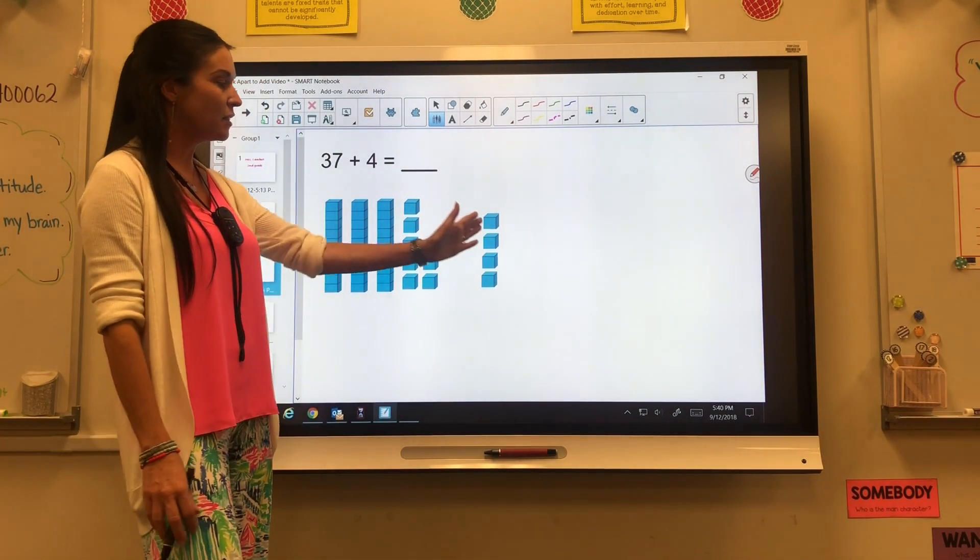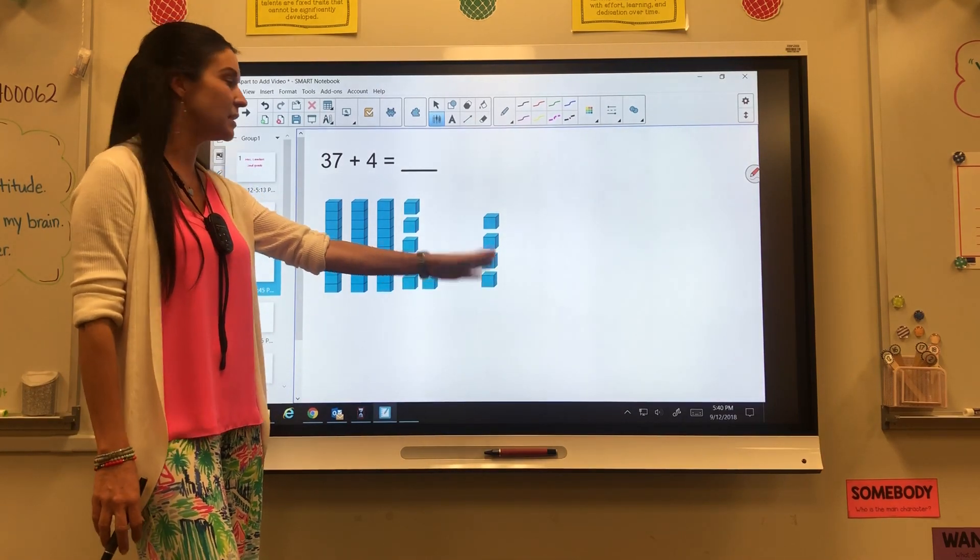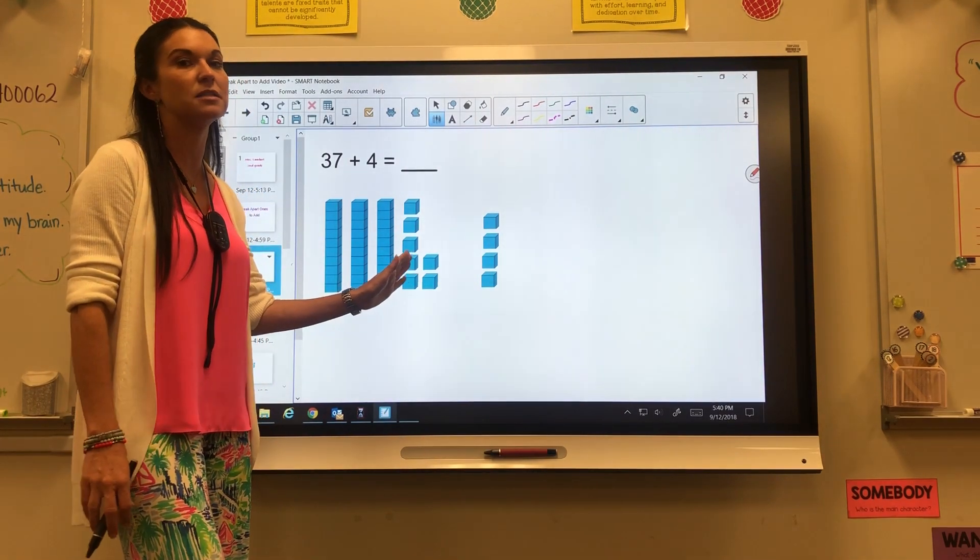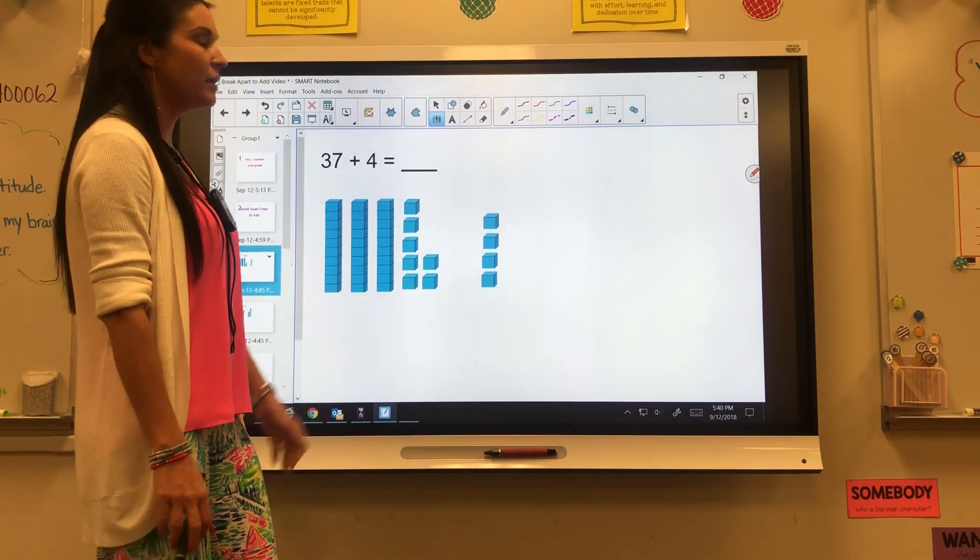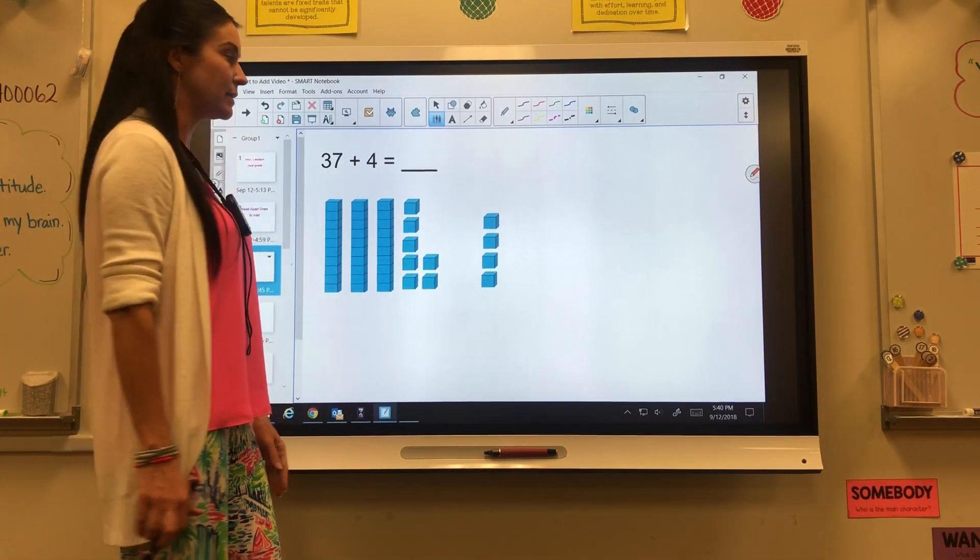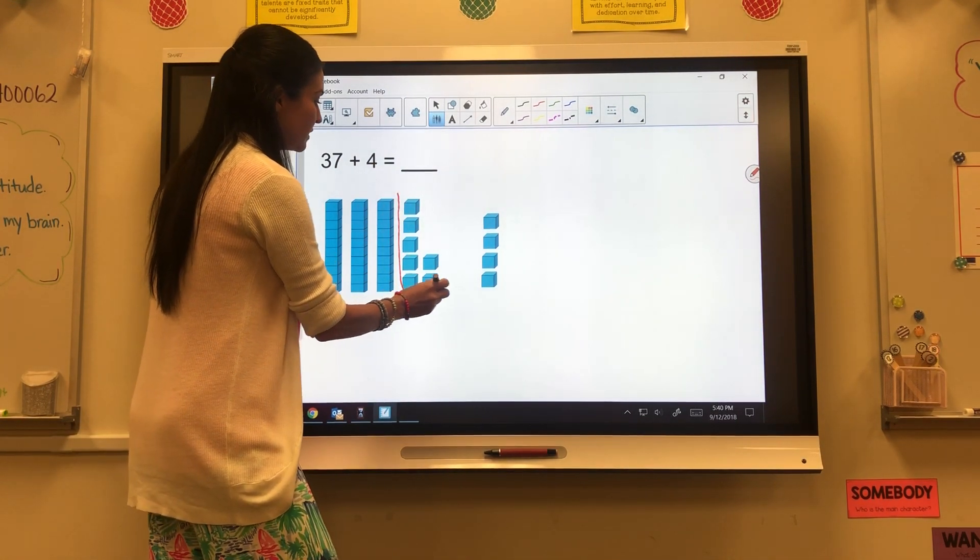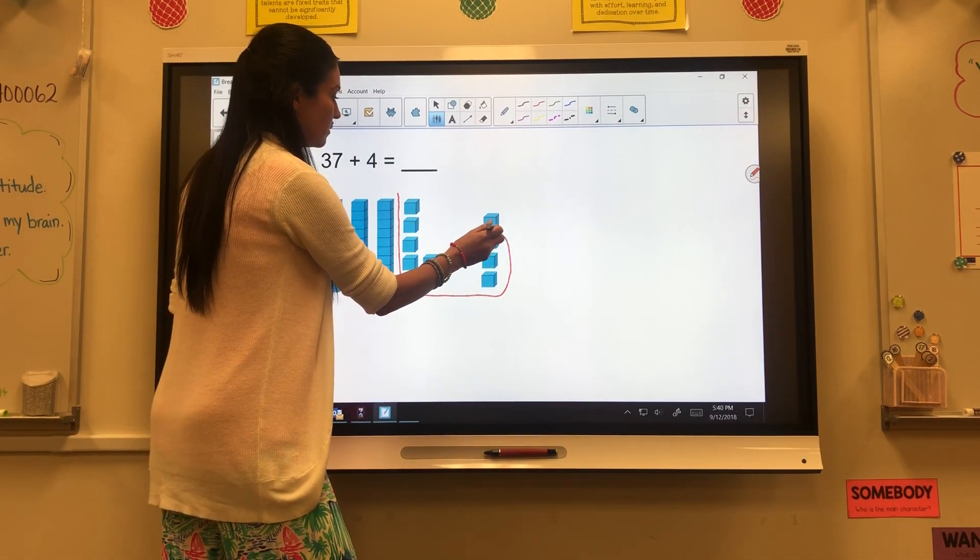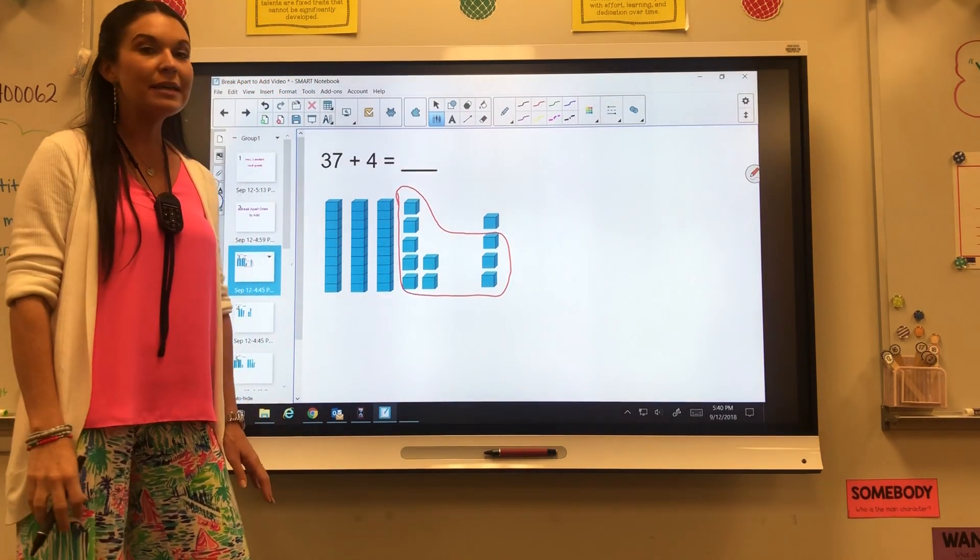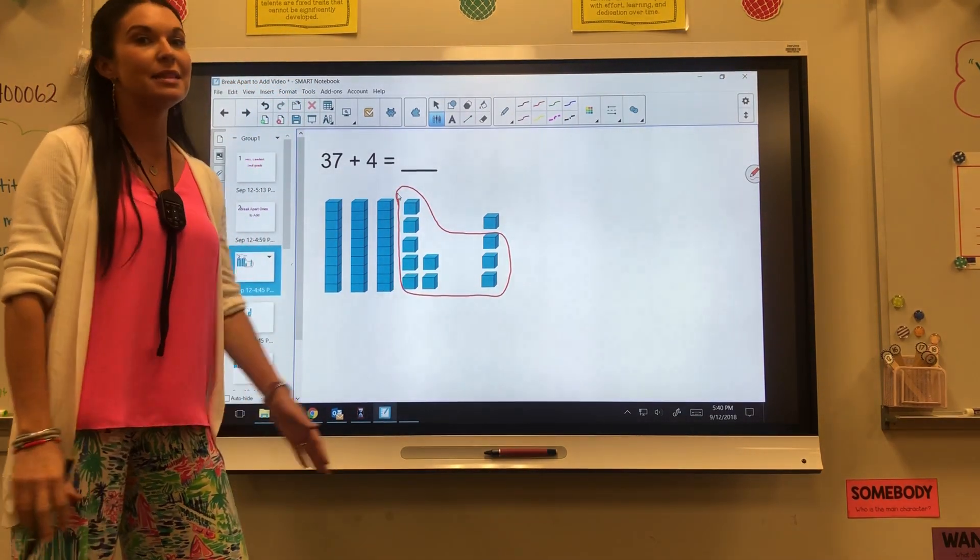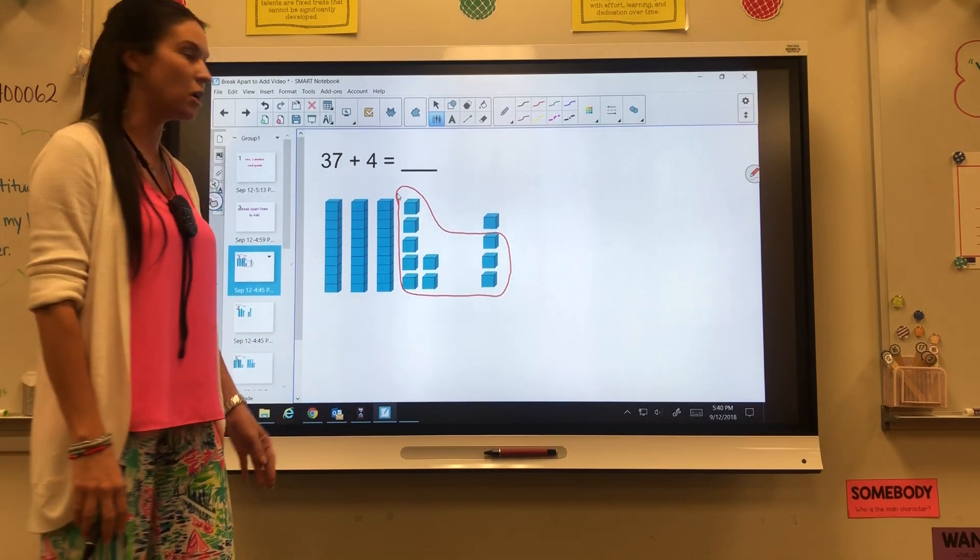To do that, we're going to take the ones from the side that has the least and we're going to move them over to the side that has the most and make that a 10. So if I have seven ones, I know that I need three more ones to get to 10. So I'm going to group these together. Now I need to remember that this is a 10.